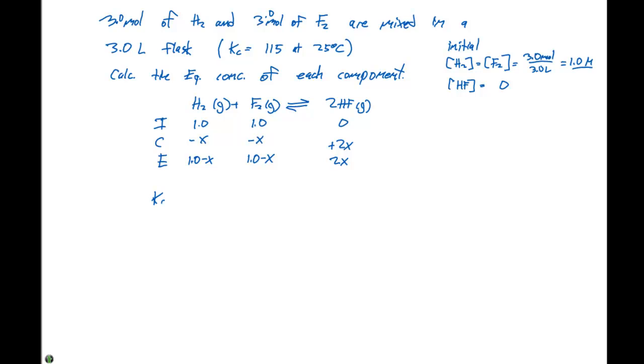If we set up our Kc expression, it's the concentration of HF squared, divided by the concentration of H2 times the concentration of F2. That equals 2x squared divided by 1.0 minus x times 1.0 minus x. We can write this as 2x squared divided by (1.0 minus x) squared equals 115.